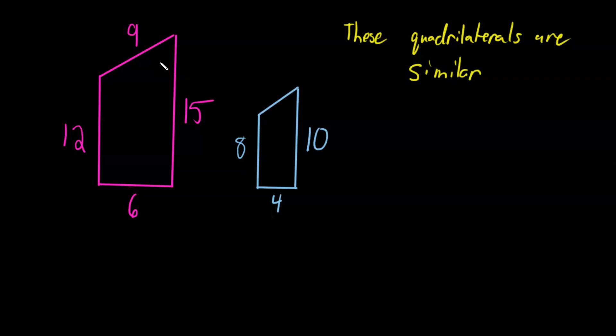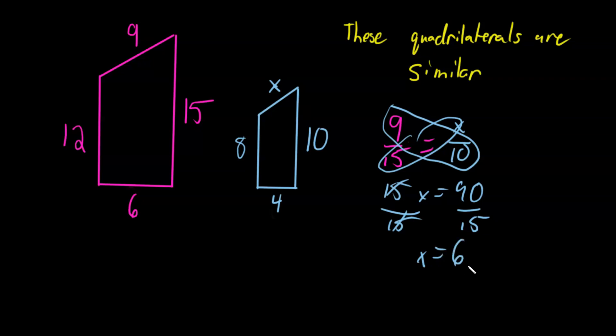So the ratio from 9 to 15 is equal to the ratio from this unknown value, let's call it x, from x to 10. And we know how to solve proportions. We just cross multiply, and we end up getting 15x equals 90. Divide by 15, and we end up getting x is equal to 6.